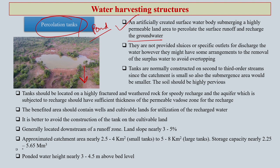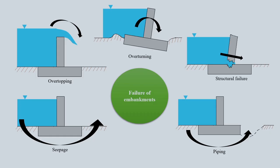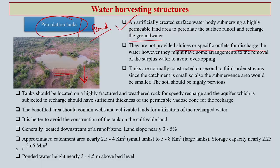Percolation ponds are not provided with sluices or specific outlets for discharge of water. However, they can have arrangements for removal of excess or surplus water to avoid overtopping. Overtopping and overturning can also take place, so we have to keep that in mind.